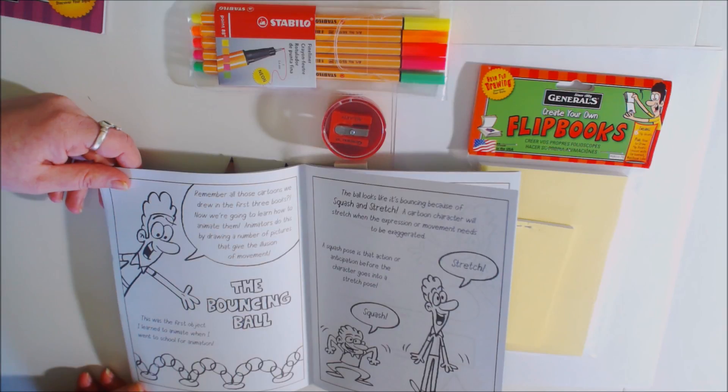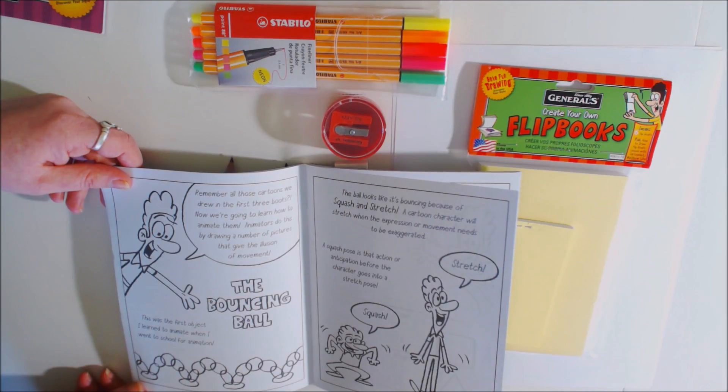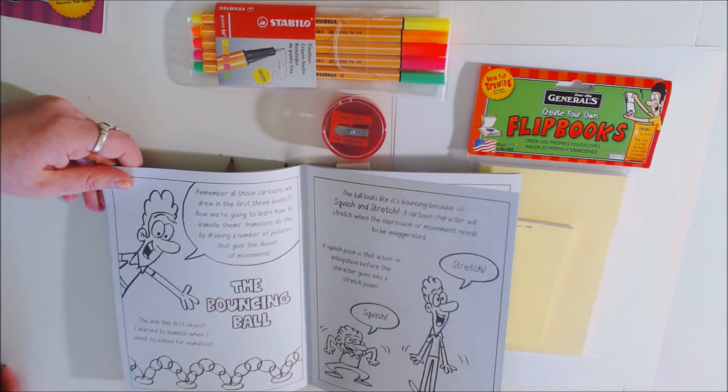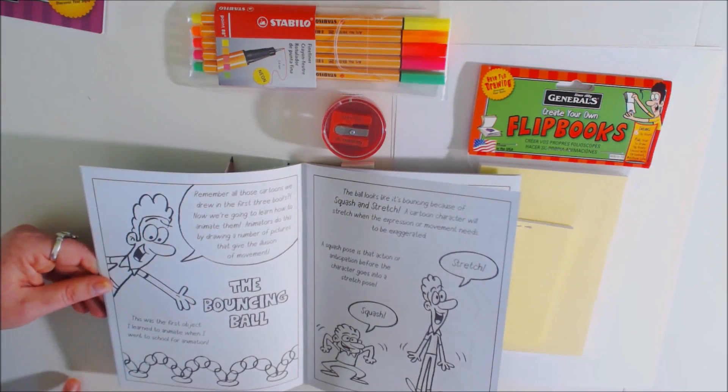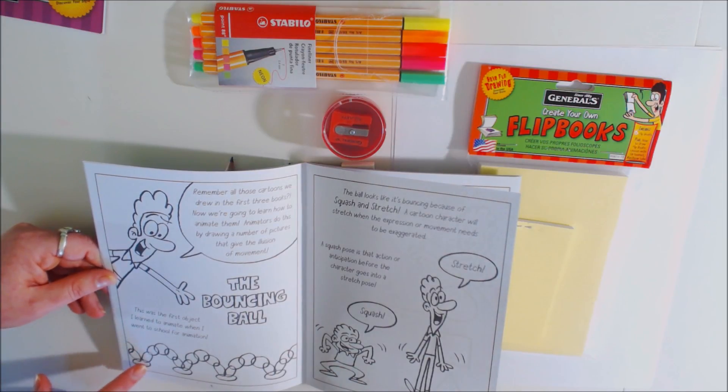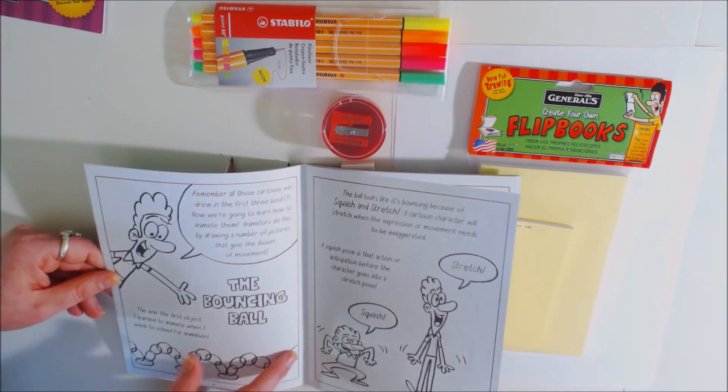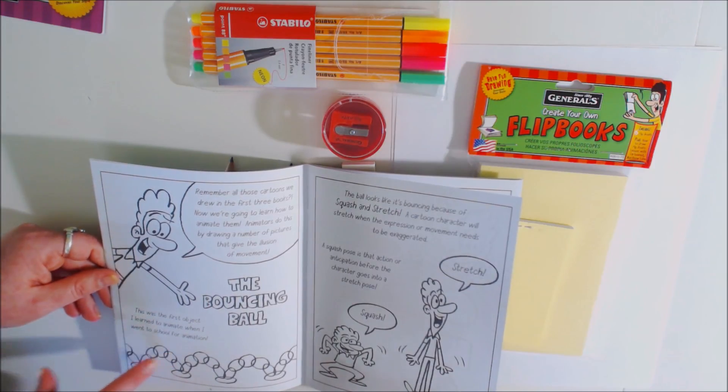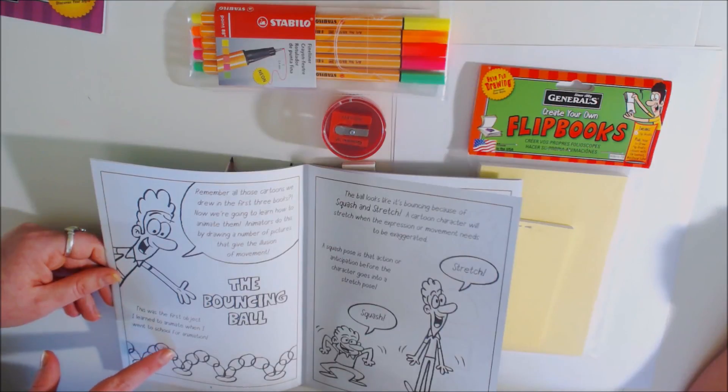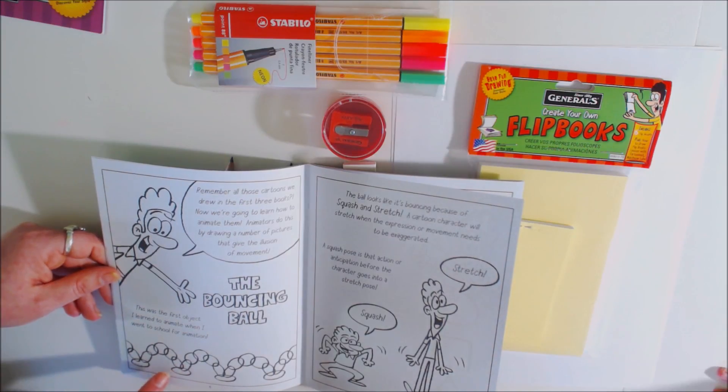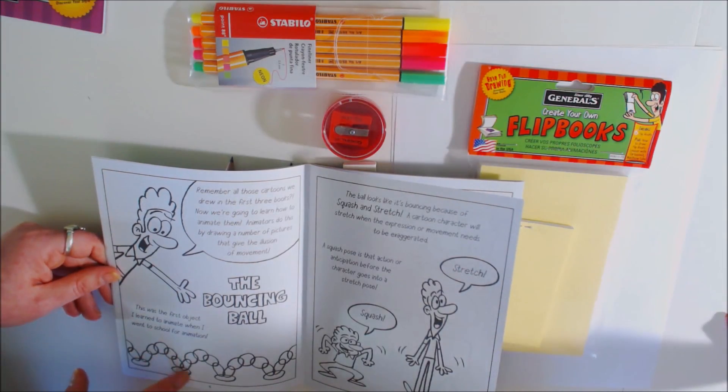So remember all those cartoons we drew in the first three books? Now we're going to learn how to animate them. Animators do this by drawing a number of pictures that gives them an illusion of movement. This was the first object they learned to animate when I went to school for animation. So what is this? The bouncing ball. You see how it's showing all the movements of the ball here? Now you see that when it's up top it's a perfect circle, right? But as it goes this way it stretches out a little bit, and then it stretches out even more. And then at the bottom, look at this, it flattens out. You see how it's not a circle anymore? It's an oval.